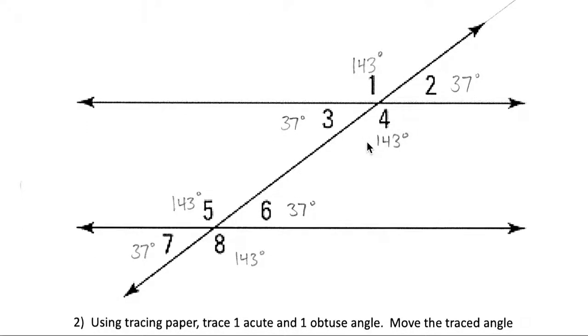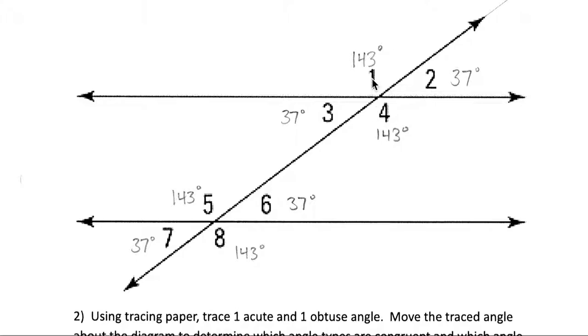So using a protractor to measure all these angles we can see that angle 1 and angle 4 are the same. Well we know that because they're vertical, but also angle 1 and angle 5 are the same, so those corresponding angles must be the exact same measure. That should make sense because corresponding angles are not different angles, they're just the same angle moved to a different spot.